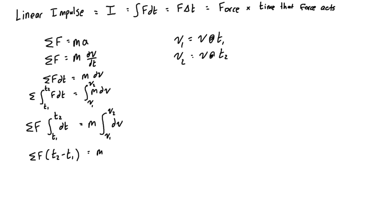So we can rewrite t2 minus t1 as just delta t, the change in time, equal to mass times the change in velocity. Or what I like to do is distribute the m across so we have m v2 minus m v1.